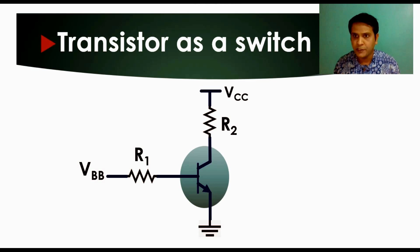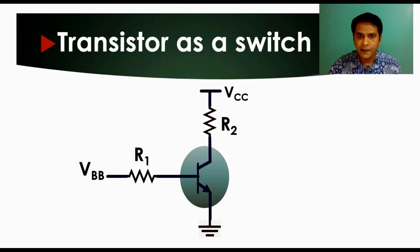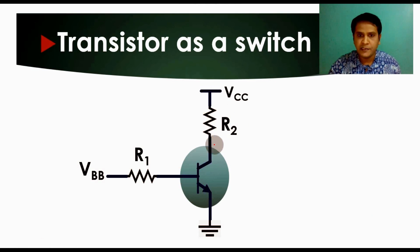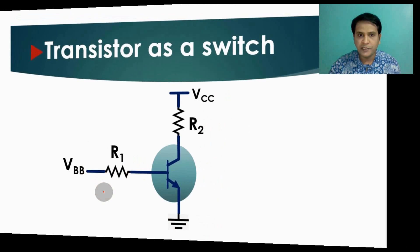We will understand this using the basic circuit of the transistor. Here you can see VCC, the collector voltage, which is connected through resistance R2. We have an NPN transistor — the collector is connected to R2, the emitter is connected to ground, and the base is connected to the base drive resistance. Then we have VBB, the base voltage.